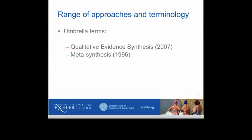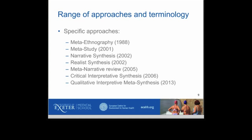There is a big range of approaches and terminology about evidence synthesis in qualitative research. There are several umbrella terms which don't refer to a particular method but describe any synthesis of qualitative research: qualitative evidence synthesis and meta-synthesis. In terms of specific approaches — in date order — the earliest were described as meta-ethnography. There's also meta-study, narrative synthesis, realist synthesis, meta-narrative review, critical interpretive synthesis, and qualitative interpretive meta-synthesis. There's also aggregative synthesis and various others, but many have only been used in one or two syntheses.